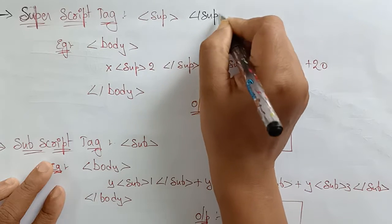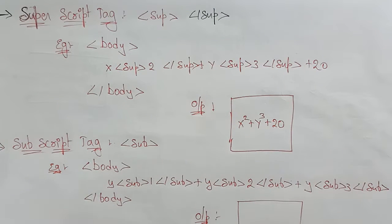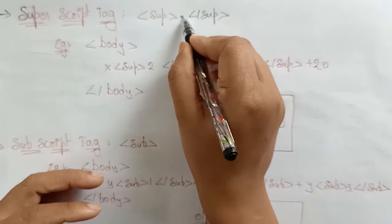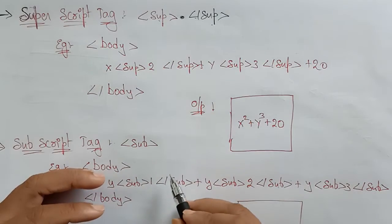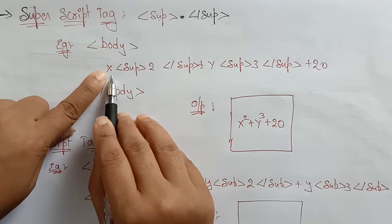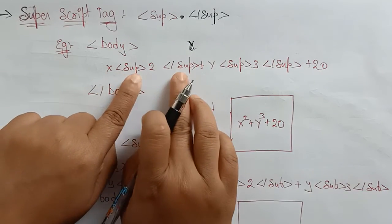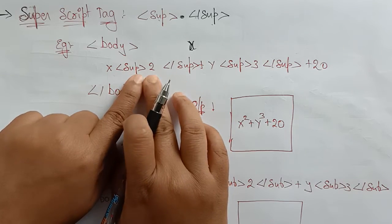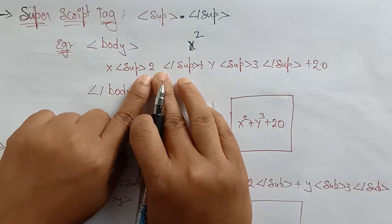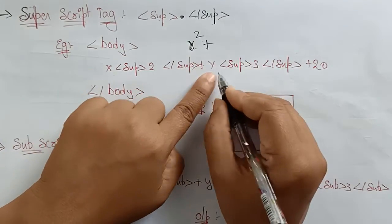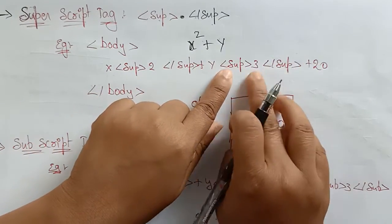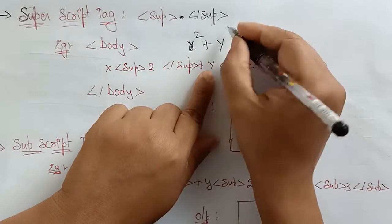The superscript tag has an opening and closing tag — it is not a standalone tag. Whatever number you want to print above (in power form), you write it between the opening and closing tag. For example, here x is written, and between the superscript open and close there is a 2, so that gives x power 2. Then y is there with 3 inside the superscript tag, giving y power 3.